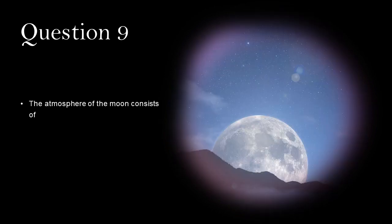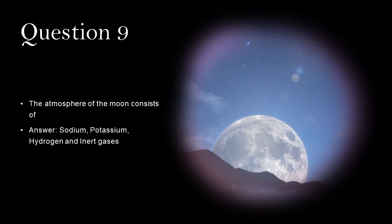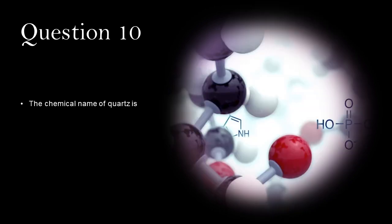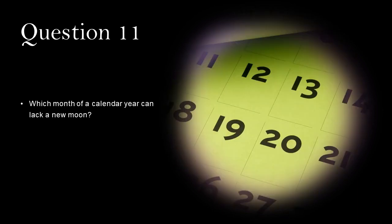The atmosphere of the moon consists of sodium, potassium, hydrogen and inert gases. The chemical name of quartz is silicon dioxide. Which month of a calendar year can lack a new moon? February.